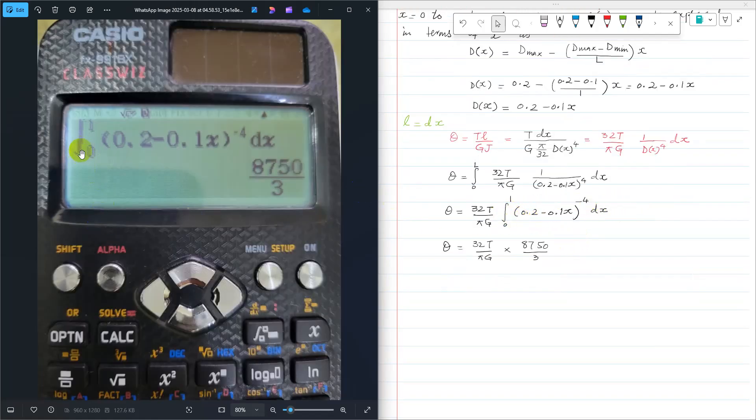So now integration in the calculator: that is integration from 0 to 1 of 0.2 minus 0.1 X raised power minus 4 DX. When you press equal button, you will get 8750 over 3, so that is integration of this whole expression using calculator.